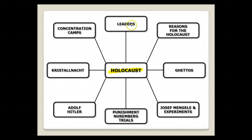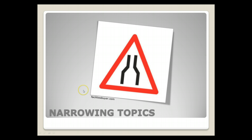And so what I did is I took the Holocaust and I thought of all these different things that are connected to it: concentration camps, leaders, reasons for the Holocaust, the ghettos, Joseph Mengele and experiments, punishment of the Nuremberg trials, Adolf Hitler and his role, and Kristallnacht. Now, because of this, I have an idea of different categories that are connected to the Holocaust.